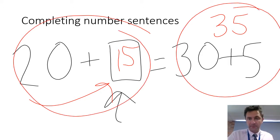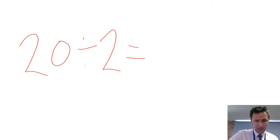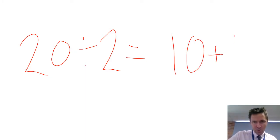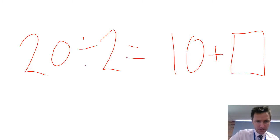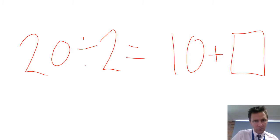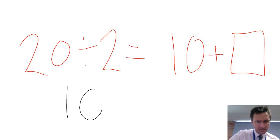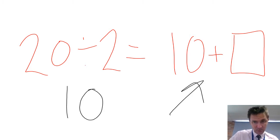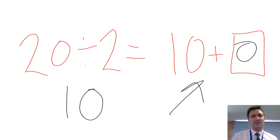Let's do another one. Let's do 20 divided by 2 equals 10 plus square. The question is: what's in the square? 20 divided by 2 equals 10, so over here it's going to equal 10 as well. So it's got to be 10 plus 0, meaning the answer would be 0.